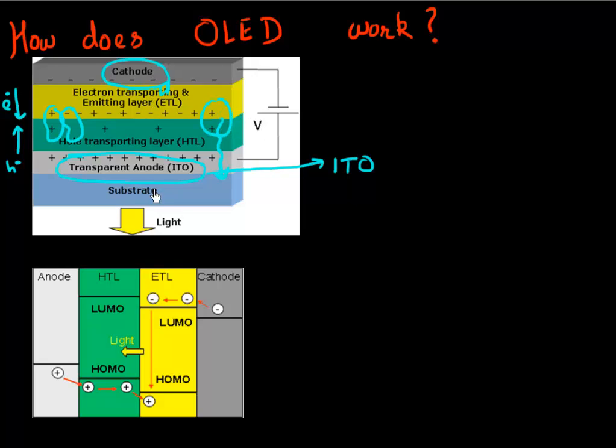So essentially you have a cathode, you have an anode which is transparent, and you have these different layers, two different layers to transport your electrons and your holes.